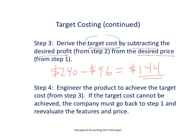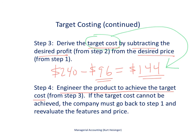That is our target cost. The next step is to engineer the product to achieve that target cost. We go to our engineers and say: we have this laser printer, we know customers will buy it for 240 dollars, and if we can produce it for 144 dollars, then we will make the desired profit of 96 dollars. It's up to the company to find a way to produce that product for the target cost established in step three.